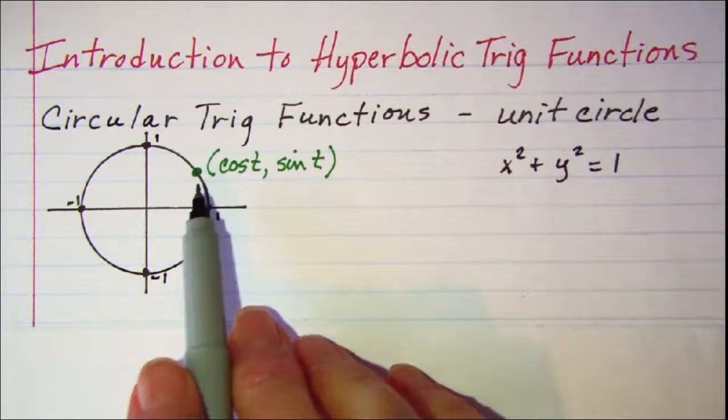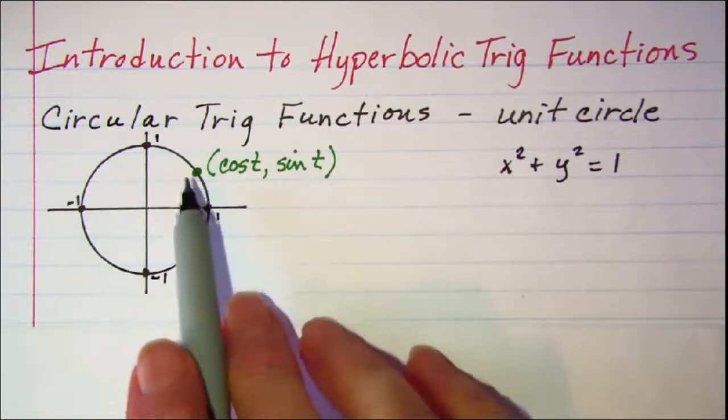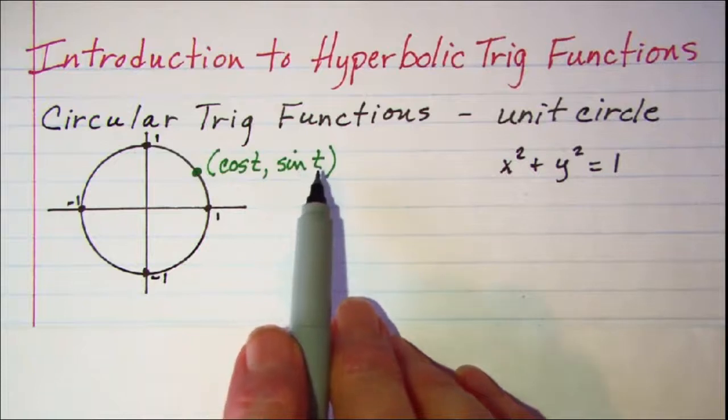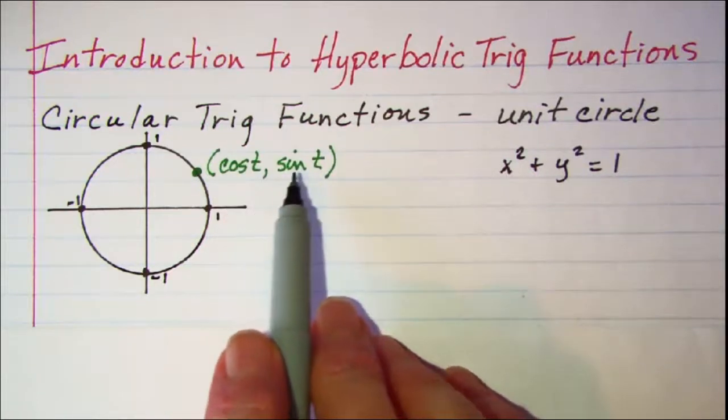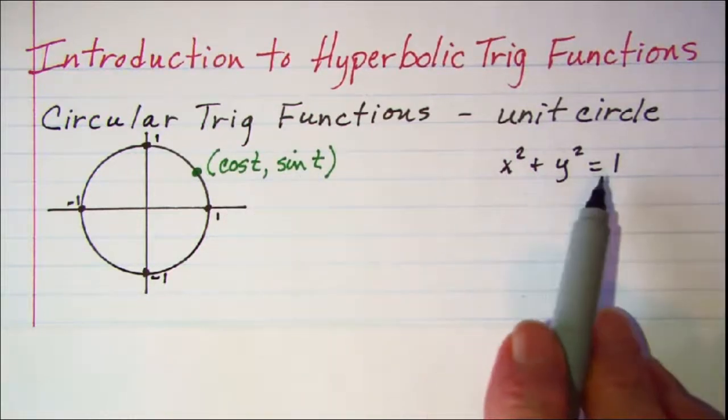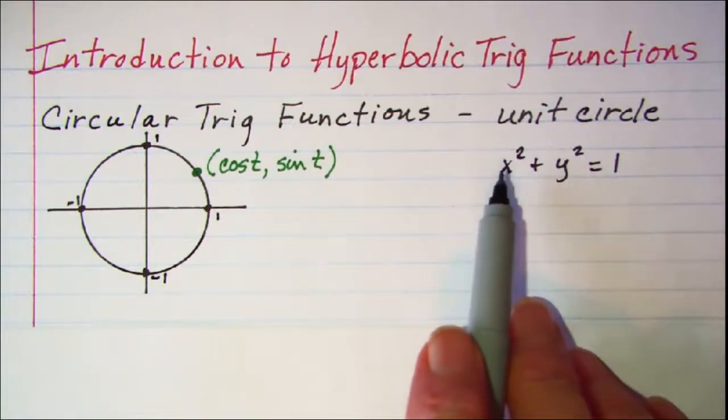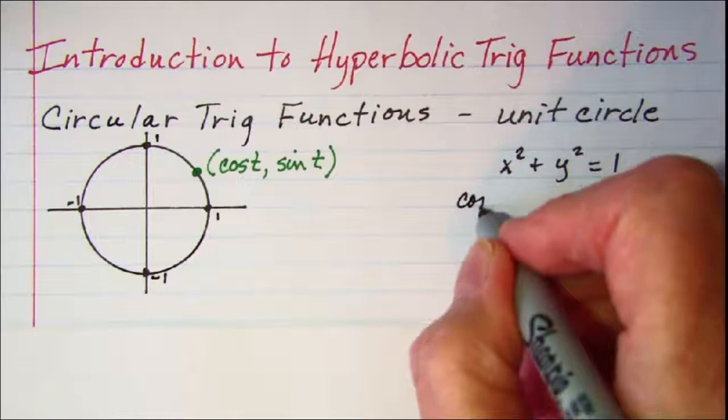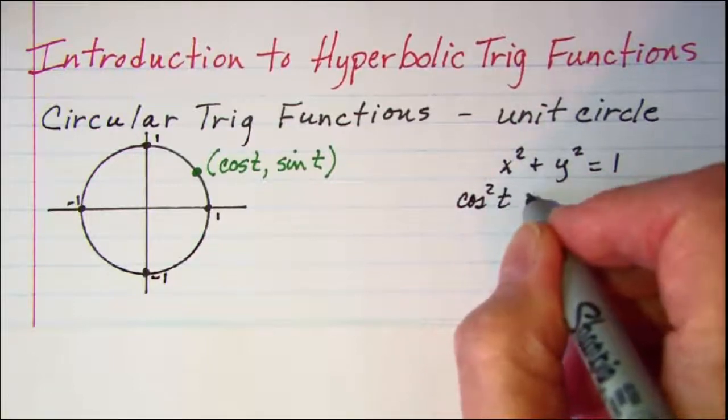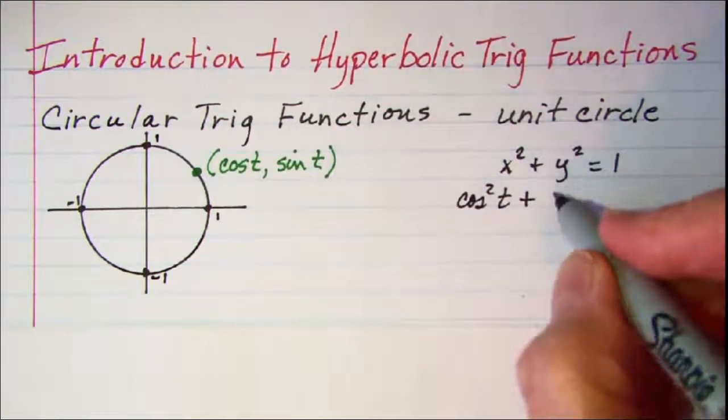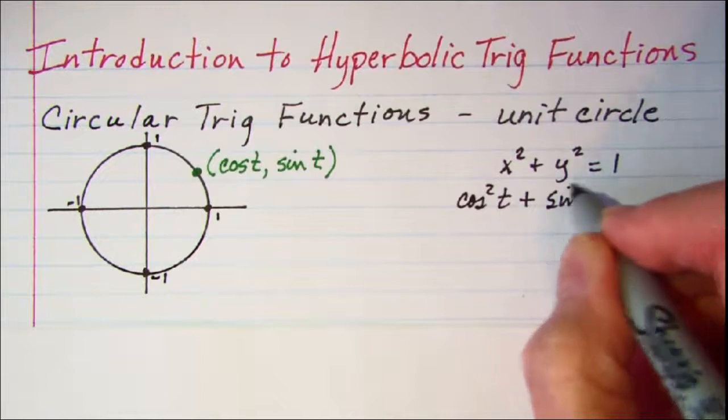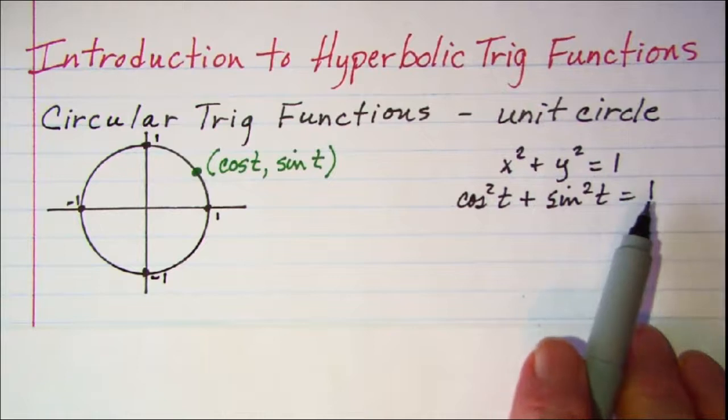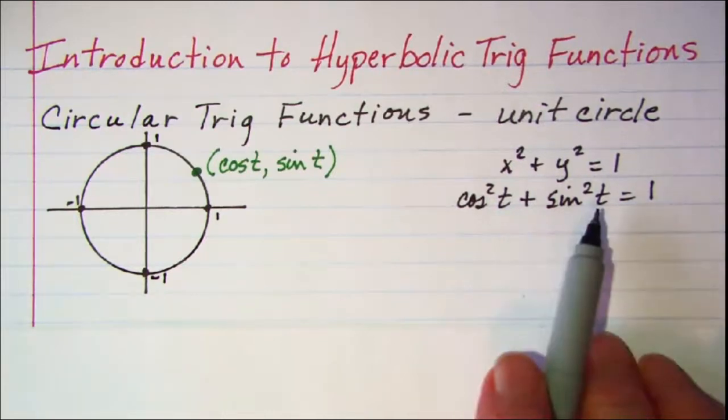I labeled a point on my unit circle with the coordinates cosine t, sine t. If we put these coordinates into our equation of our unit circle we get cosine squared t plus sine squared t is equal to 1. We can recognize this as our Pythagorean identity.